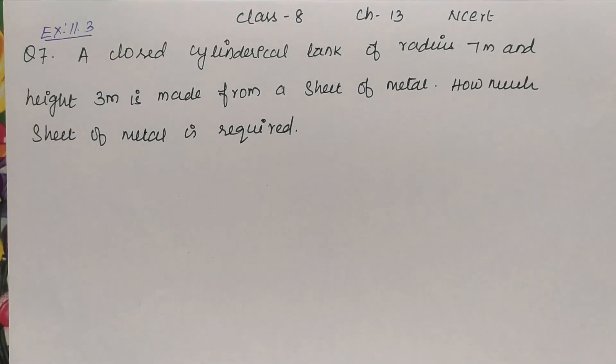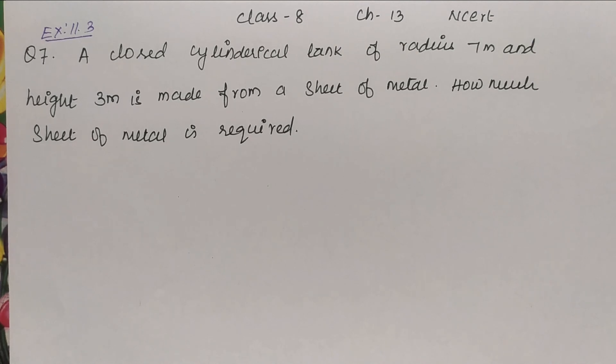Question number 7. A closed cylindrical tank of radius 7 meter and height 3 meter is made from a sheet of metal. How much sheet of metal is required?